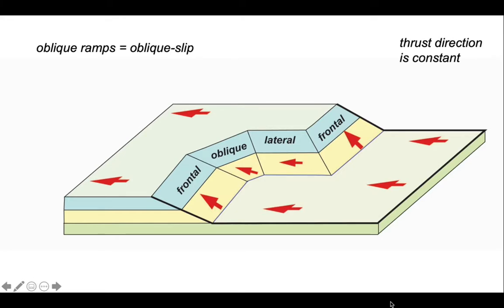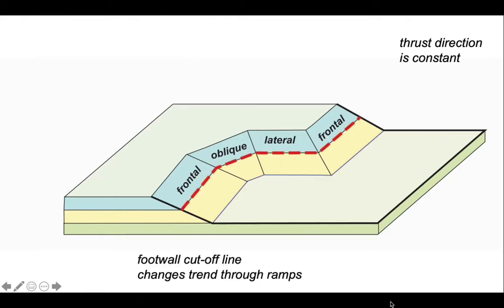We can pick out these variations by thinking about the line of intersection between one of the beds in the foot wall and the fault surface at the ramp. Between the yellow and blue horizons where they intersect the fault plane forms this line. It's called a cutoff line, the foot wall cutoff line, and it changes trend through the ramps.